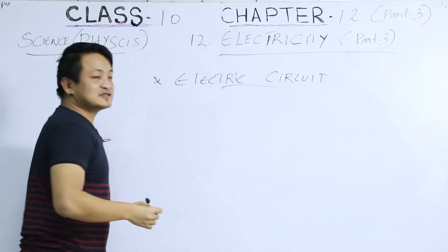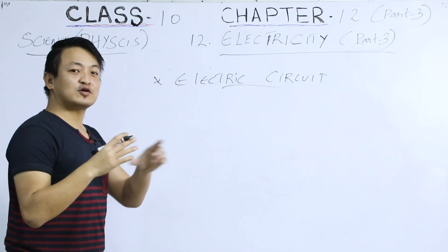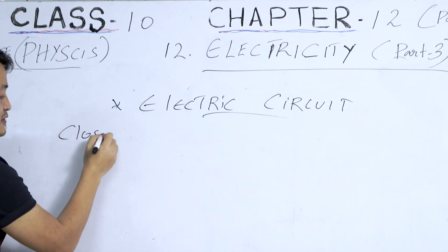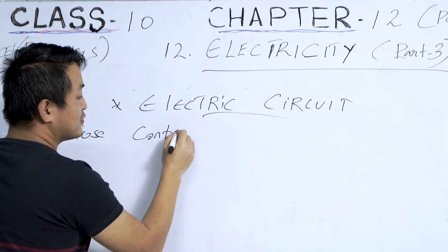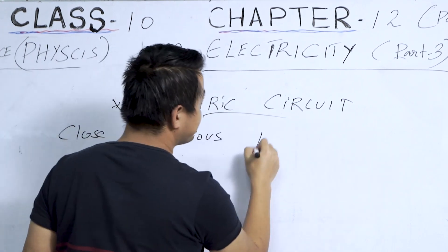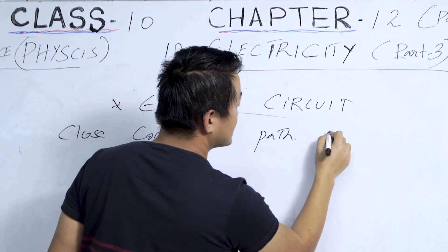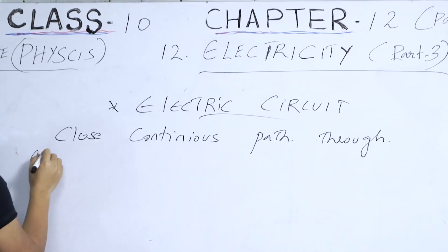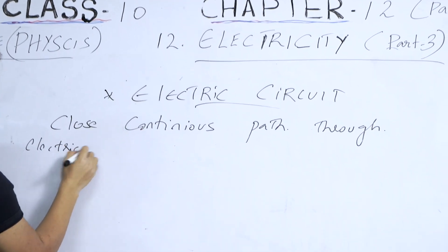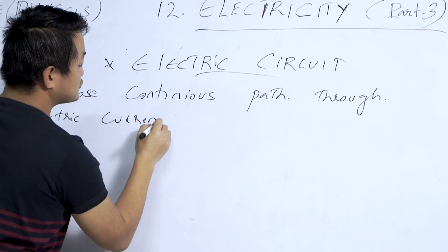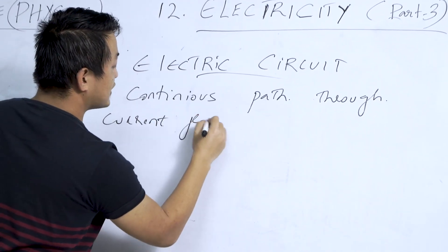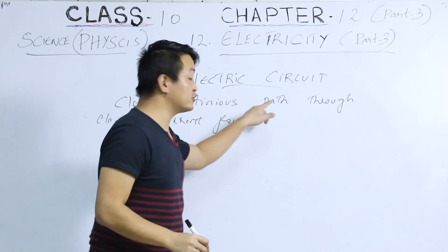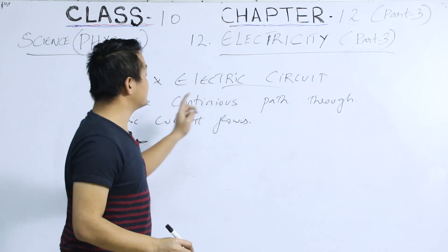So what is an electric circuit? It is a closed continuous path through which current flows.